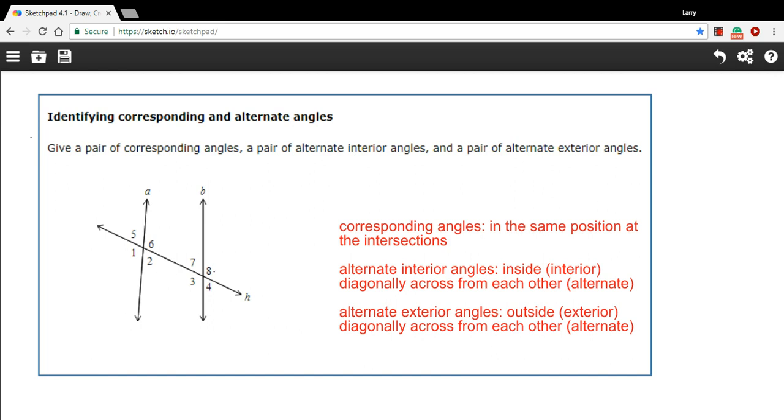One of the things that happens is you get four angles at these two intersections of the transversal with the other two lines. And there are specific names for the types of angles you get in a figure like this.